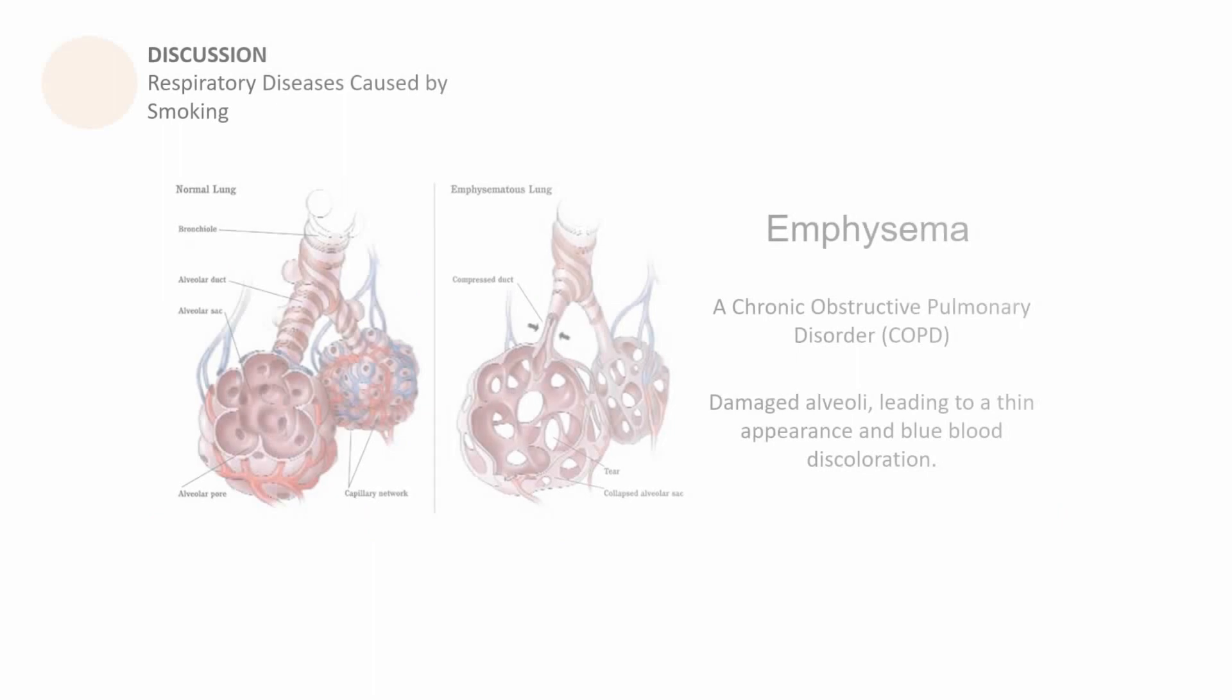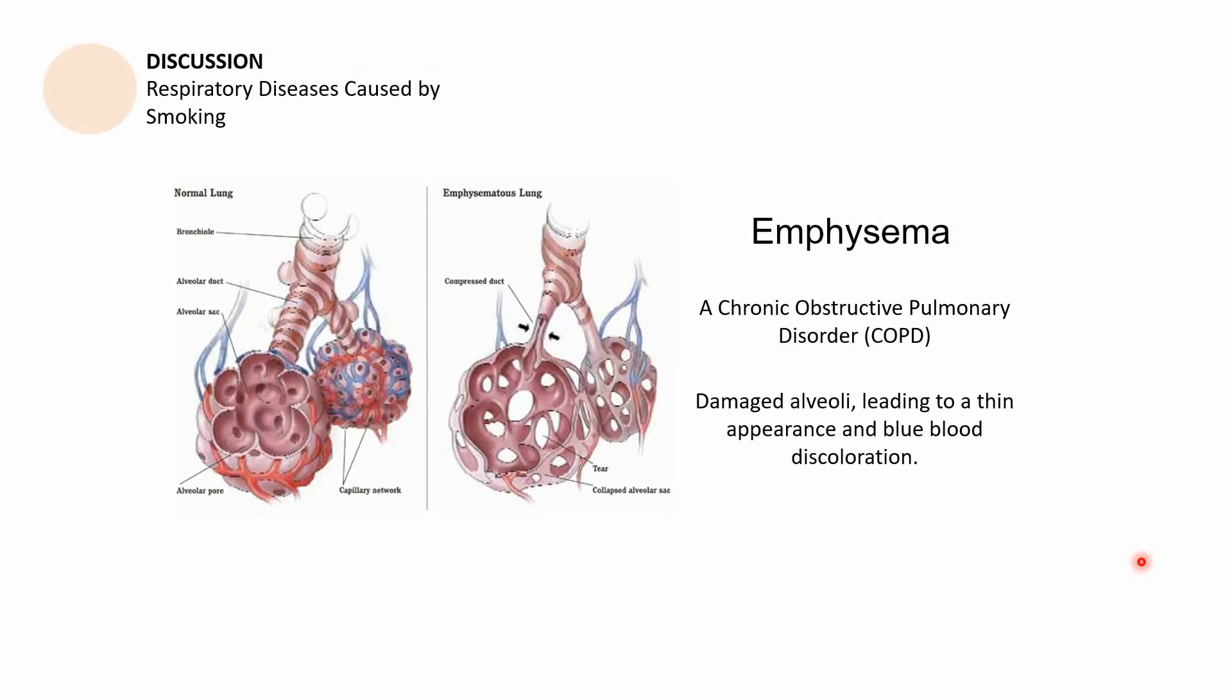The next one is emphysema. These are alveoli, alveolus singular. Emphysema is also a chronic obstructive pulmonary disorder and it is characterized as damaged alveoli leading to a thin appearance and blue blood discoloration. When a lung is emphysematous, it means a lot of alveoli leading to a lot of ruptures.